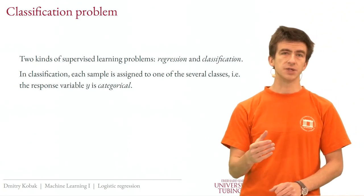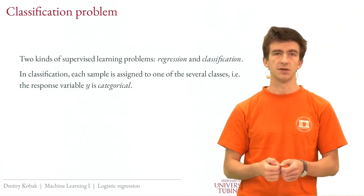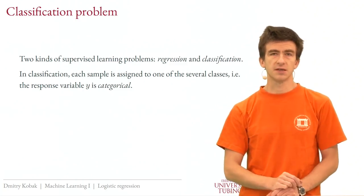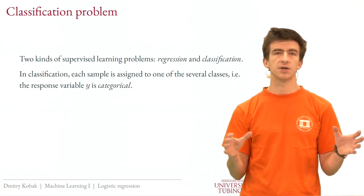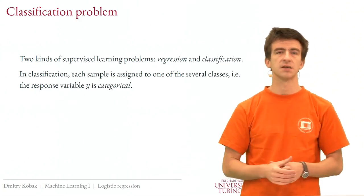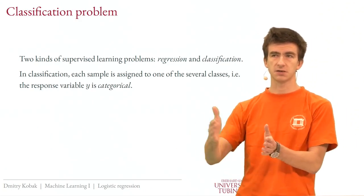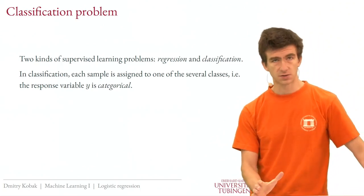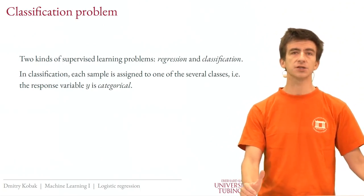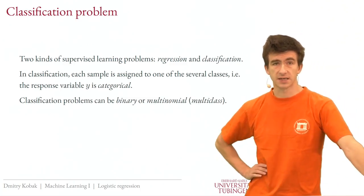We can think of the response variable in classification as being a categorical variable — a variable that takes values in a set like {cat, dog, crocodile, panda}. It's important that these are discrete categories with no ordering. The crocodile is as far from a cat as from a panda. We don't assume any ordering, because you can have discrete values that are ordered like integers, but that's not what we're talking about here. In all these classification lectures, we assume the categories are unordered and the response variable Y is categorical.